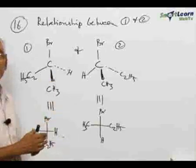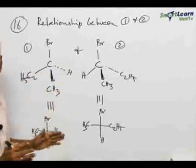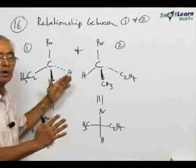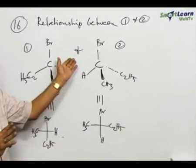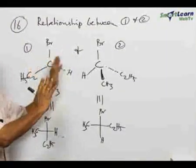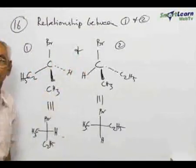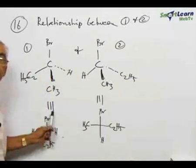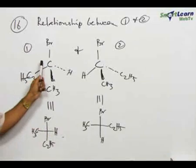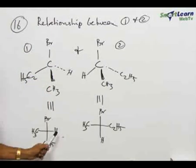From this wedge projection, since they are present in three different planes, this has to be converted to a Newman projection. From the wedge projection, you may not be able to decide immediately whether the two are enantiomers or two representations of the same compound. Therefore, they are being converted to a Newman projection.